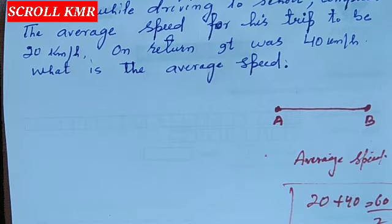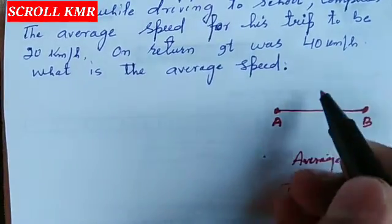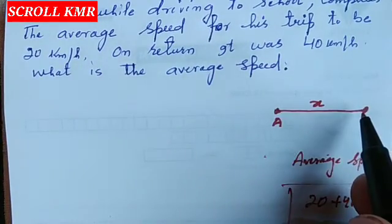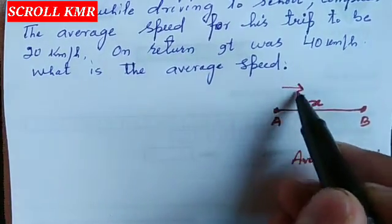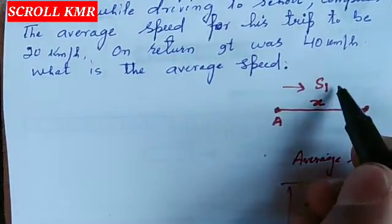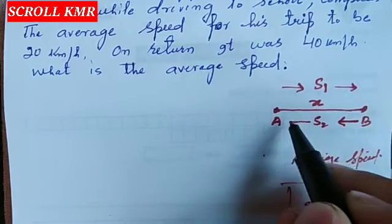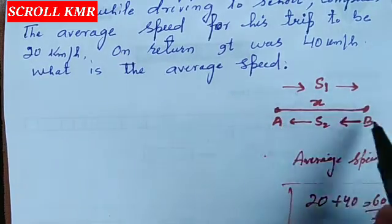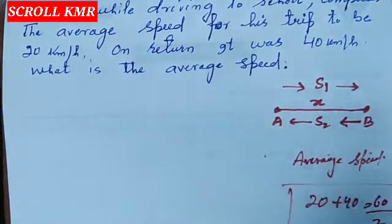اگر آپ کو video اچھا لگے تو like بھی کیجئے اور اگر کوئی بھی problem ہو تو comment میں suggest کریں۔ تو یہاں پہ ہم دیکھیں گے: جب Abdul A سے B تک جاتا ہے تو total distance نہیں دی گئی، تو ہم مانیں گے A سے B تک distance ہے x۔ B سے A تک بھی distance x ہی ہوگی۔ A سے B تک speed کو s1 رکھیں گے اور B سے A تک speed کو s2۔